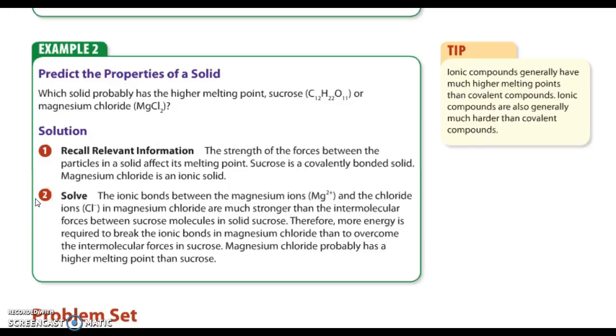The ionic bonds between the magnesium ions, Mg2+, and the chlorine ions, Cl-1, in MgCl are much stronger than the intermolecular forces between sucrose molecules in solid sucrose. Because they're all just kind of plain. Here, you have a positive and a negative that lines up to the next positive, negative, positive, negative, positive, negative. You get the pattern, the crystal structure.